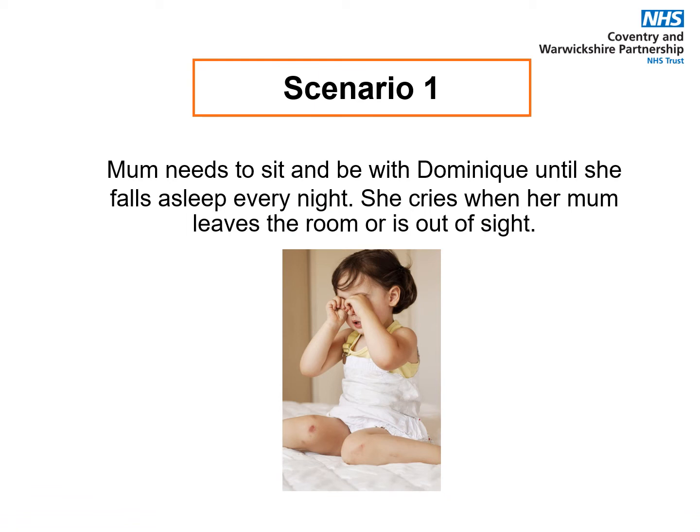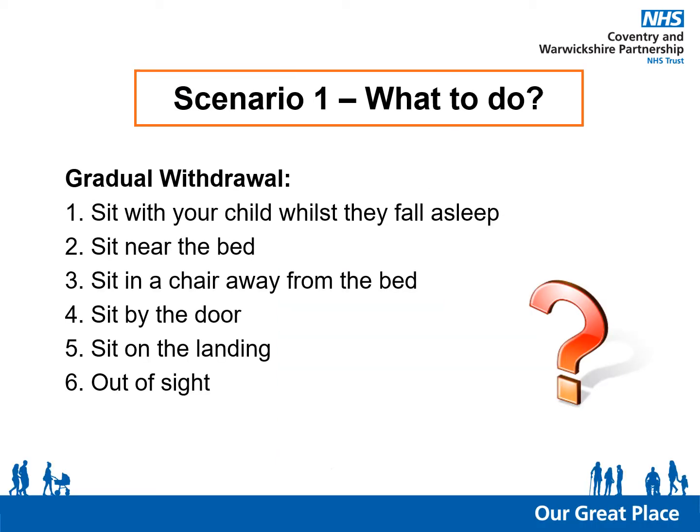Our first scenario: Mum needs to sit with Dominique until she falls asleep every night, and Dominique cries when her mum leaves the room or is out of sight. The general principle is to begin by sitting with your child until they fall asleep and then gradually increasing the physical distance between you. They need to be comfortable and able to tolerate each distance well before increasing further, and on the slide you will see one example of how you could divide this approach into stages.